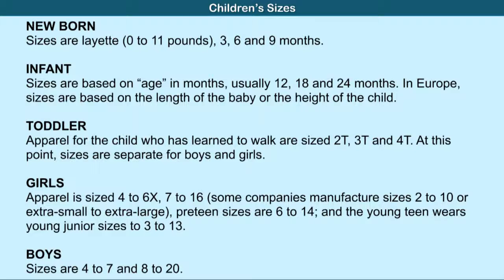Apparel for the child who has learned to walk goes from size 2T to 3T and 4T. At this point sizes are separate for boys and girls. Girls' apparel is sized 4 to 6X and 7 to 16. Some companies manufacture sizes extra small to extra large. Preteen sizes are 6 to 14, and young teen wears young junior sizes 2 to 13. Boys' sizes are 4 to 7 and 8 to 20.